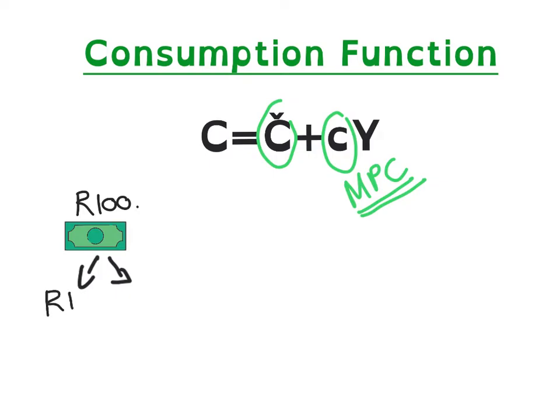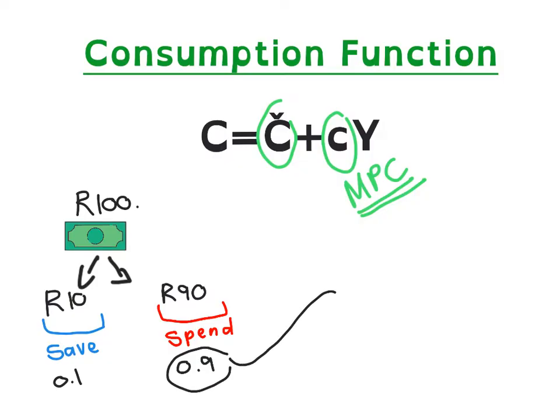So let's assume that we are going to save 10 Rand and we are going to spend 90 Rand. So from this 100 Rand, we are going to save 0.1, which will be our marginal propensity to save, and 0.9 will be our marginal propensity to consume.